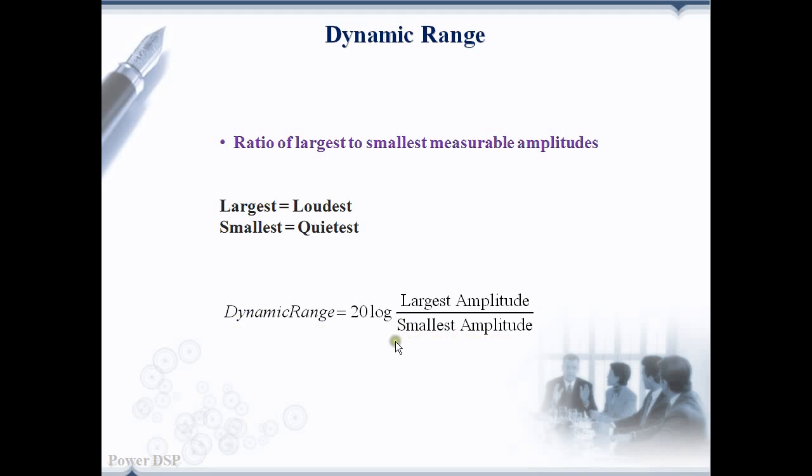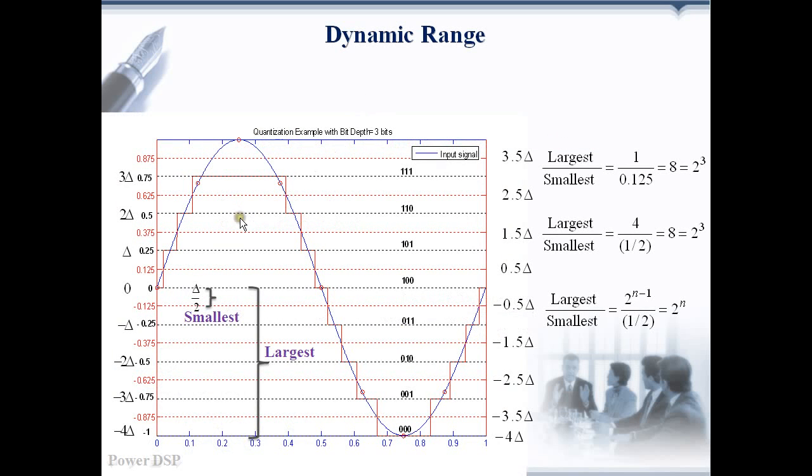Usually it is given in dB and the equation to find out the dynamic range is 20 log of largest amplitude divided by smallest amplitude. Let's take a 3 bit quantizer and see what the largest and smallest amplitudes are. The largest amplitude magnitude here is 1 volt and the smallest amplitude magnitude is 0.125 volt.